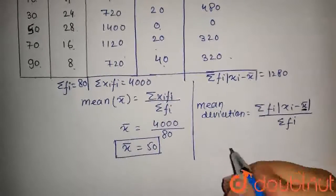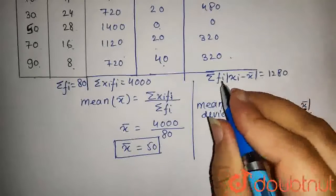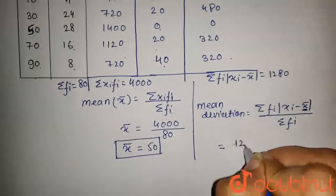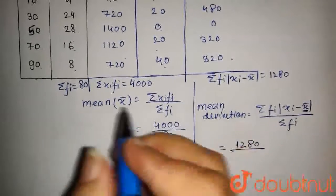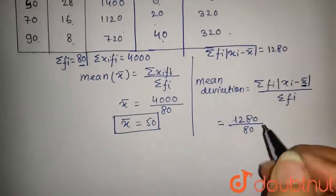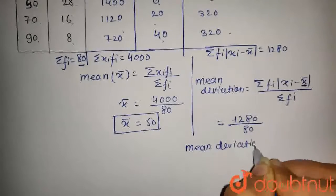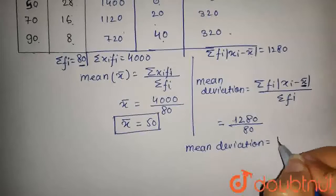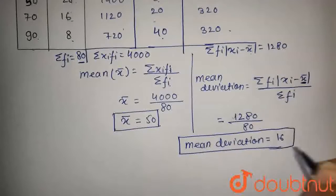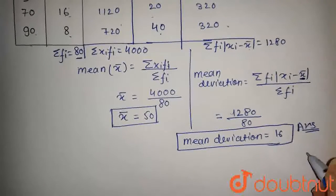Now we find the mean deviation. Putting in the values: summation of fᵢ|xᵢ - x̄| is 1280, upon summation fᵢ which is 80. So 1280 upon 80. On solving this, the mean deviation equals 16. The mean deviation about the mean for this data is 16. This is the answer to this question. Thanks for watching.